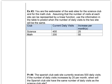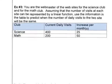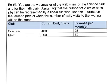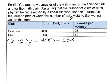Okay. So this problem wasn't so great in class. So I'm going to do it a different way, not graphically. But I'm going to show you how to set this up. You're the webmaster of the websites for the science club and the math club. Assuming that the number of visits at each site can be represented by a linear function, use the information table to predict when the number of daily visits to the two sites will be the same. So we're going to make our total number of daily visits be Y. So Y equals the total number of daily visits. And we can calculate the total number of daily visits for science by starting with our current daily visits which is 400 for science, and then adding to that 25 more visits every month. So X will be number of months.